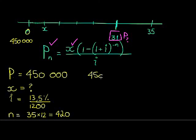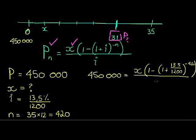So we have 450,000 is equal to x (unknown) times 1 minus (1 plus 13.5 over 1200) to the power of negative 420, all that divided by 13.5.